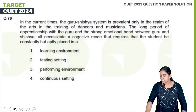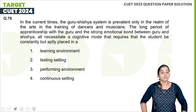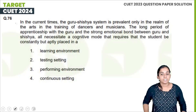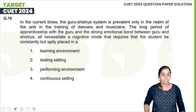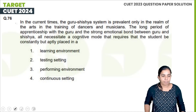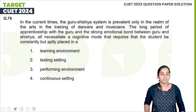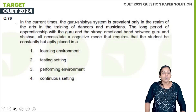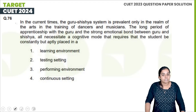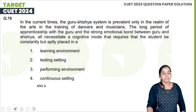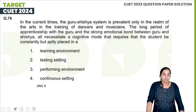The next question: In the current times, the guru-shishya system is prevalent only in the realm of the arts, in the training of dancers and musicians. The long period of apprenticeship with the guru and the strong emotional bond between guru and shishya are all necessary to achieve a cognitive mode that requires the student to be constantly but aptly placed in a learning environment.